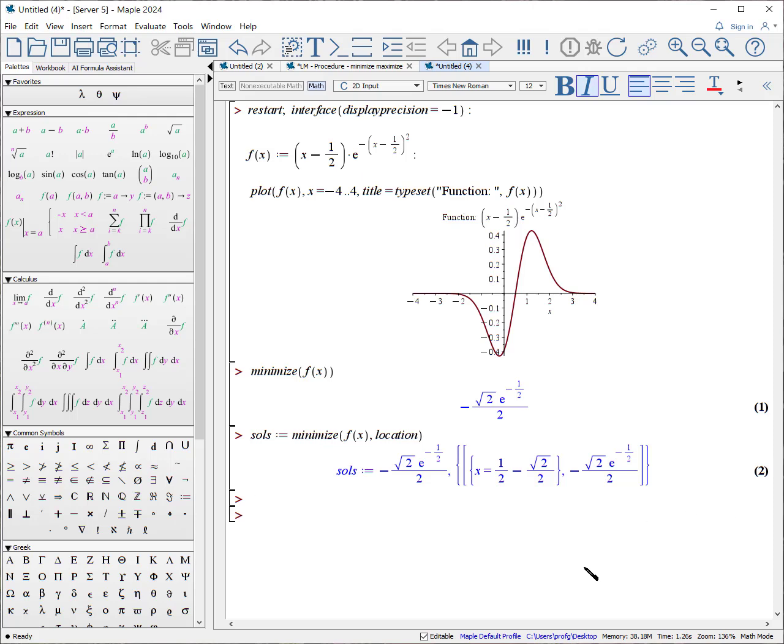From here, we can assign the answers to some values. For example, f_min colon equals solutions one. To find the location, f_min_location, we have to be careful. It's in solutions group two.